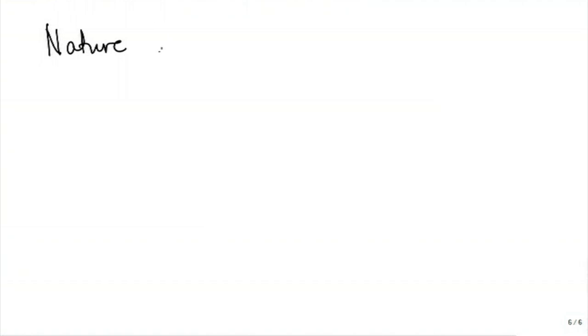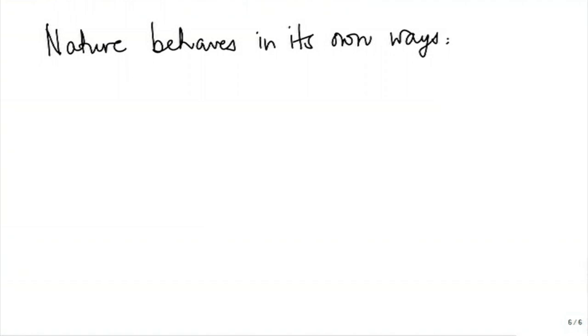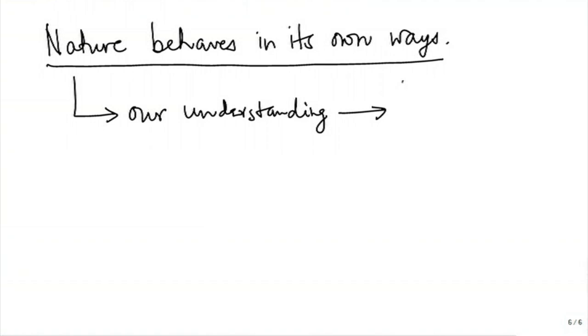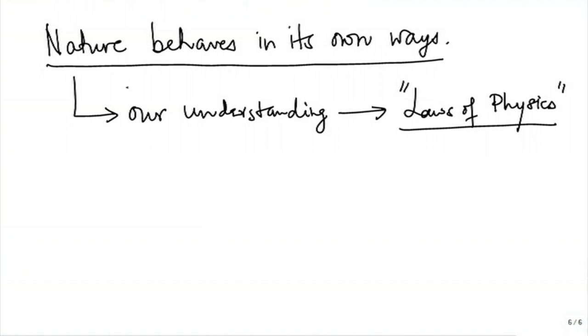Remember, nature behaves in its own ways. But there is a method in its madness — it is always consistent. If nature behaves like this today, it will behave the same way tomorrow. Our understanding of this behaviour is related to laws of physics, and laws of thermodynamics are also laws of physics. This understanding depends on who we are and the way we look at the behaviour of nature.